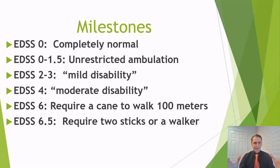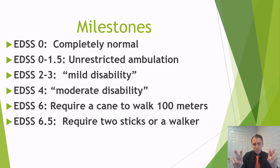An EDSS of 0 would refer to absolutely no symptoms or no problems. EDSS of 0 to 1.5 would suggest essentially no restriction in walking ability whatsoever — a marathon runner could have an EDSS of 1.5. An EDSS of 2 or 3 would generally refer to fairly mild disability. An EDSS of 4 would refer to moderate disability. At EDSS 6, a cane or some sort of assistance is required to walk 100 meters. And at 6.5, support on both sides, such as a walker, is required to walk.